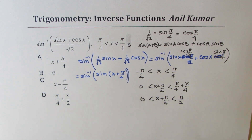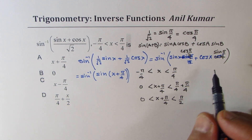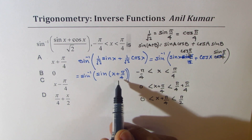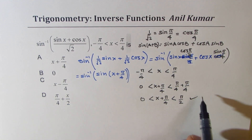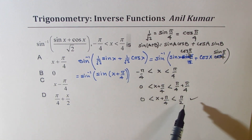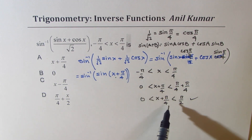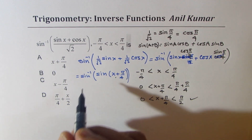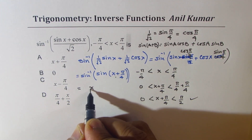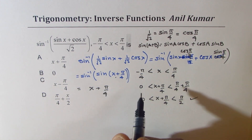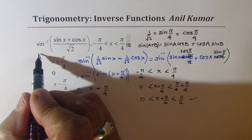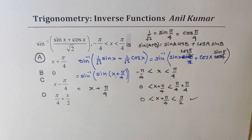That is fine because sine inverse is defined for angles between −π/2 and +π/2. Since this angle is within that interval, we get our result as x + π/4. So option A is the right answer.